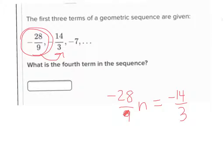We're taking this first term and multiplying it by some number to get the second term. So I'm saying I'm taking my first term, and I'm multiplying by some number n. I don't know what it is, and my result is the second term, negative 14 over 3.